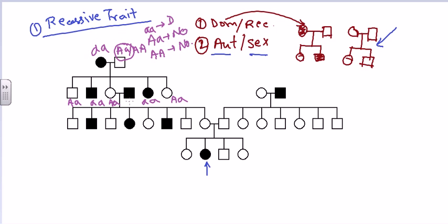Now let's follow the third generation. This particular individual is affected — they come from another family branch, so we assign aa here. The mother has genotype Aa and the father has genotype aa. Looking at their offspring: this one is infected (aa), this one is unaffected (Aa), and this one is also Aa.